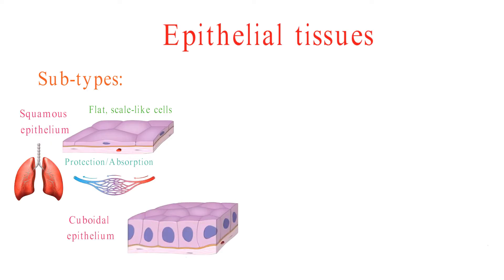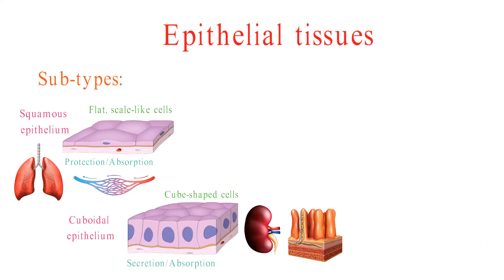Cuboidal epithelium is made up of cube-shaped cells. It is found in areas where there is a need for secretion or absorption, such as the lining of the kidneys and the small intestine.